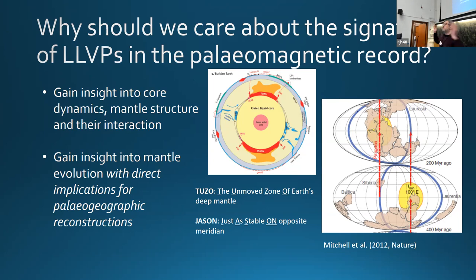Why should we care about the signature, whether it's there or not, what it is, these LLVPs on the magnetic field? It's going to give us insight into the dynamics going on in the core. It's going to tell us about stuff on the mantle side as well. The premise of the DEEP group is that paleomagnetism gives us this unique insight into the evolution of Earth through time because we can use the paleomagnetic record to go back millions, billions of years.